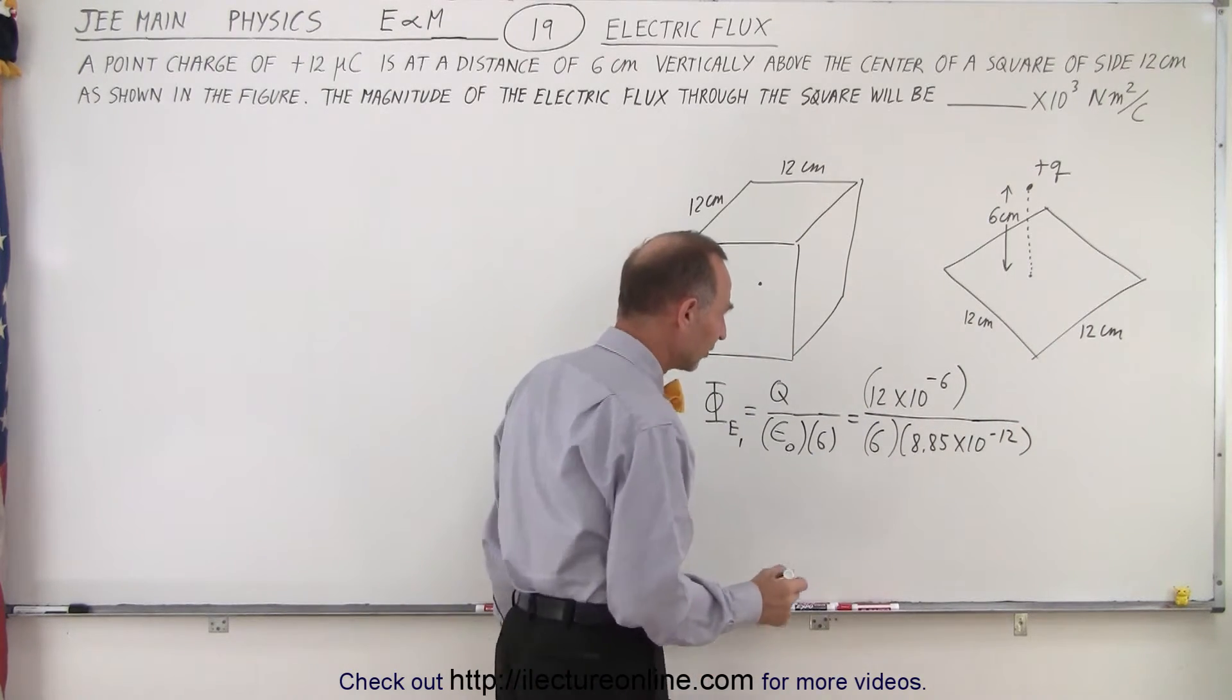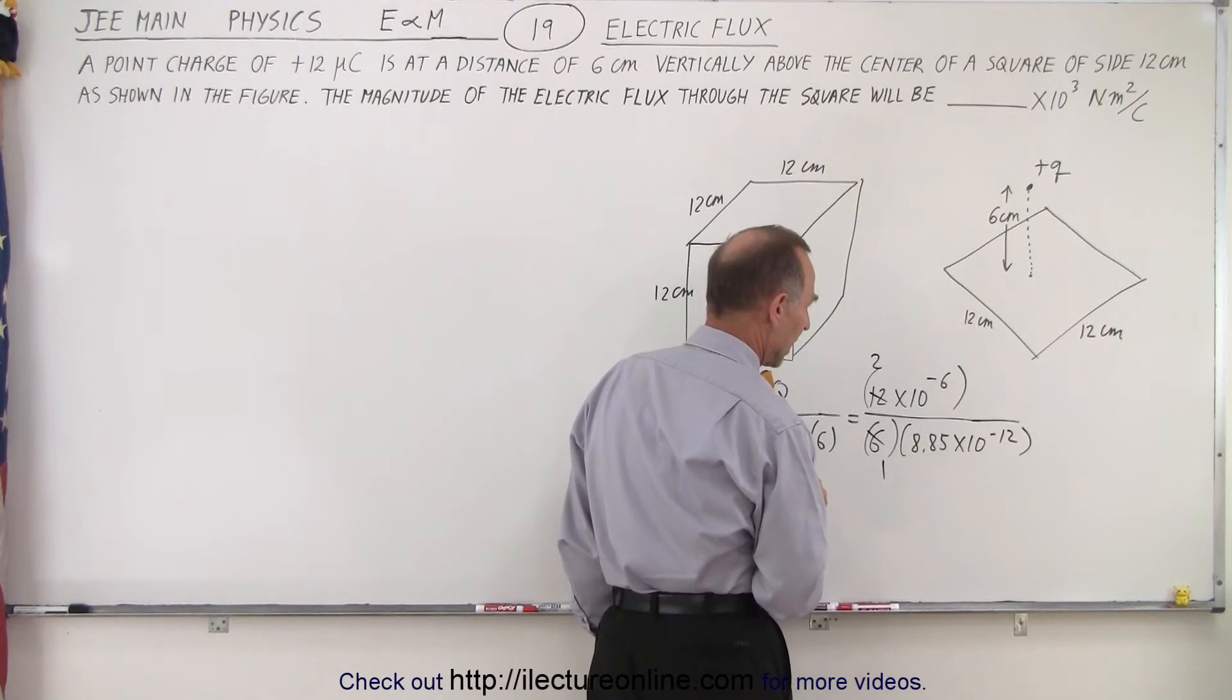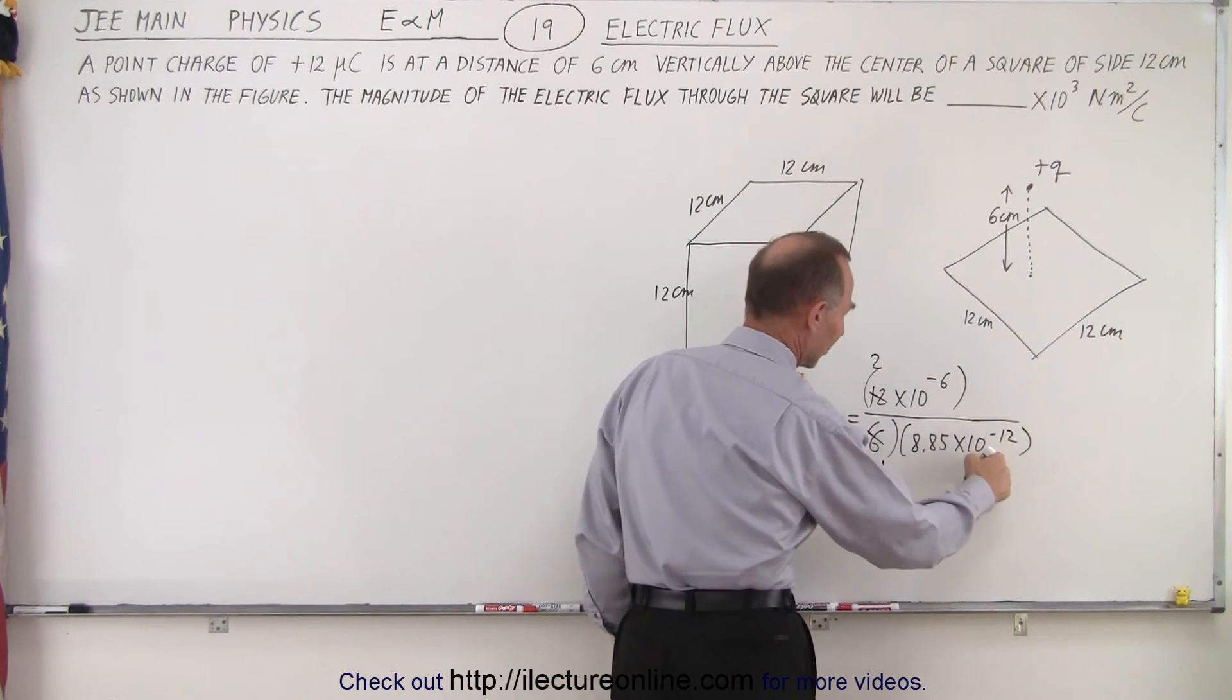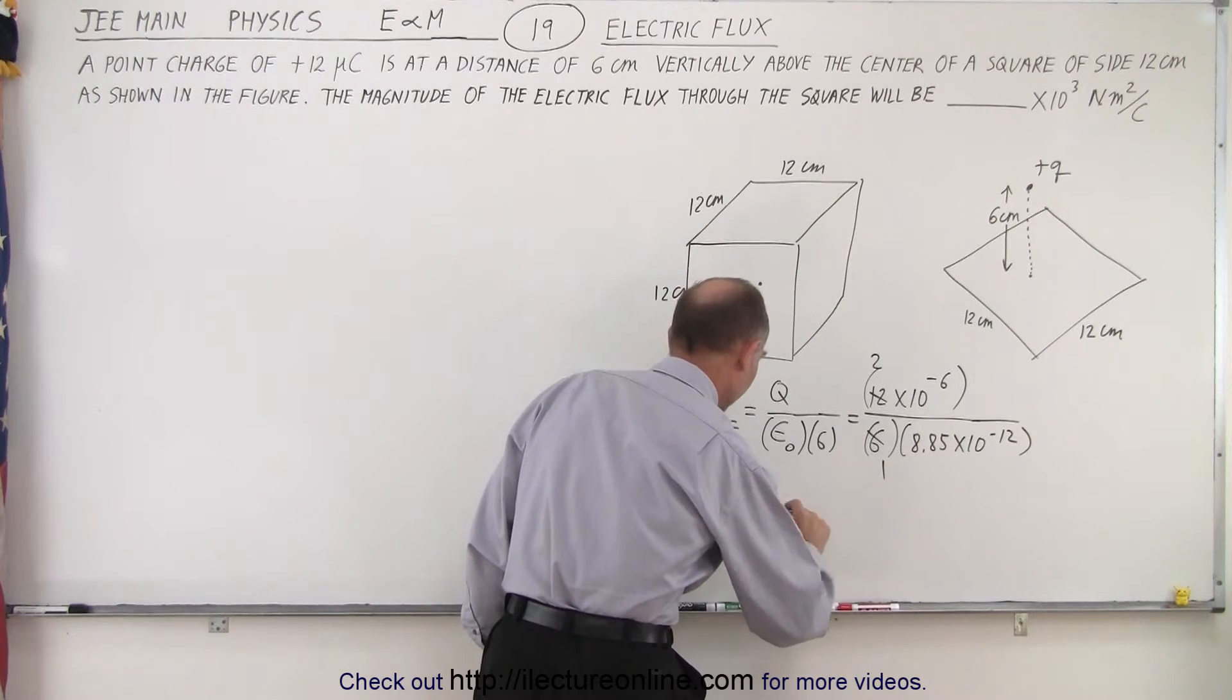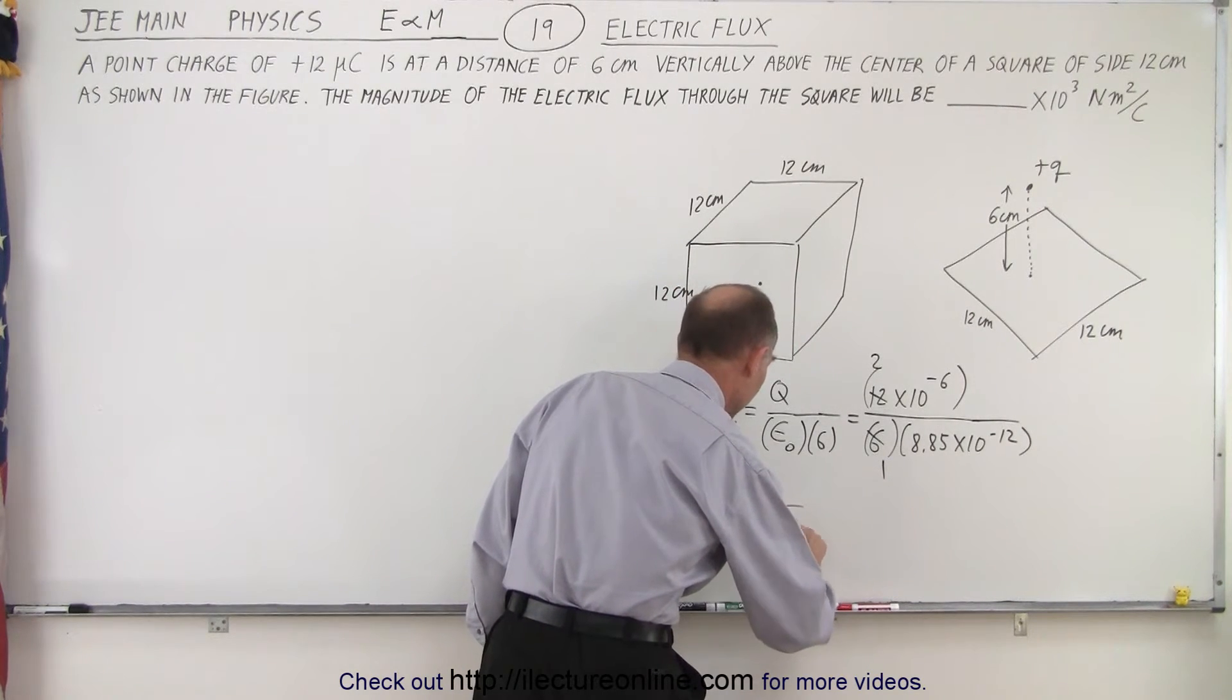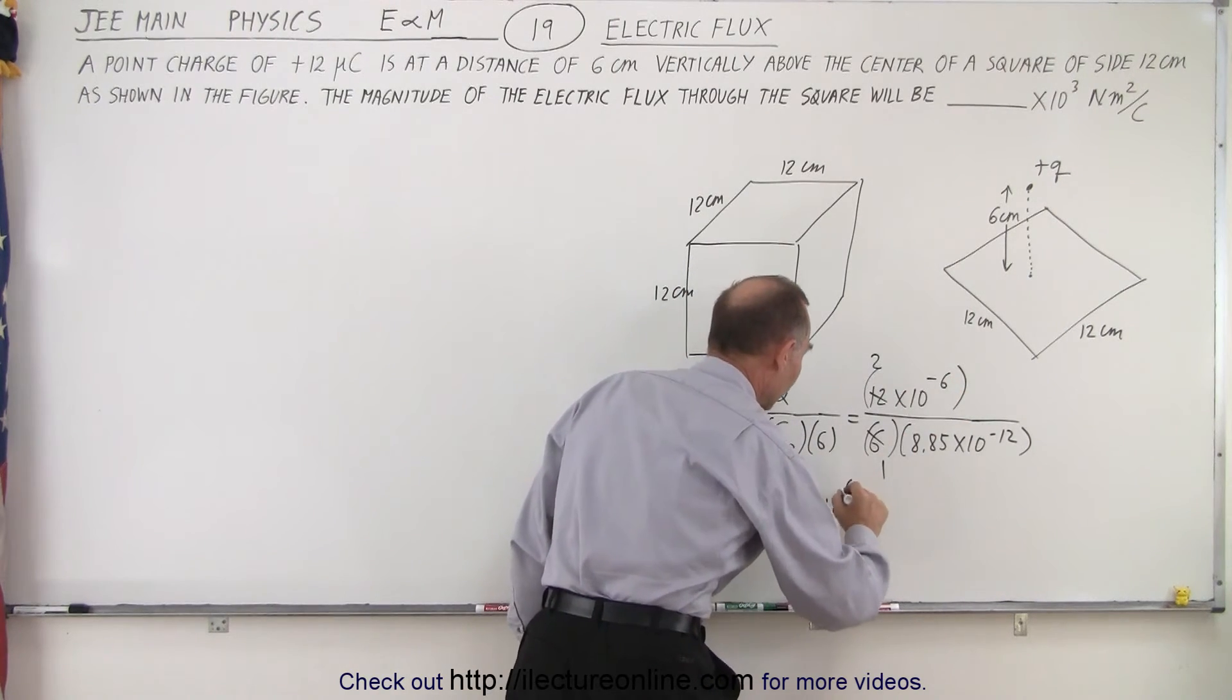We can simplify things a little bit. So this becomes 1, this becomes 2. And then we have 10 to the minus 6 and 10 to the minus 12. So that can be written as 2 divided by 8.85 times 10 to the positive 6.